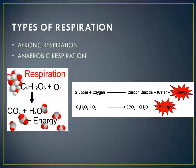Yeast and some bacteria show anaerobic respiration. Microorganisms present in food and alcohol cause fermentation. The most well-known example of fermentation is seen in wine and beer. Anaerobic respiration also takes place in the muscles of human beings during strenuous physical activities like running, cycling, heavy weightlifting, and heavy exercise. The demand for oxygen during these activities is much more than the body is able to supply, so glucose is partially decomposed to produce lactic acid.